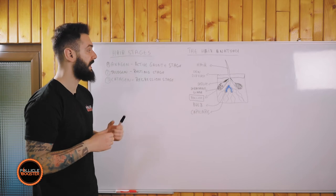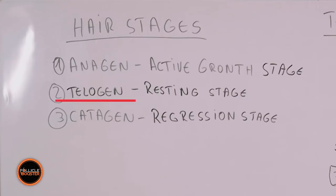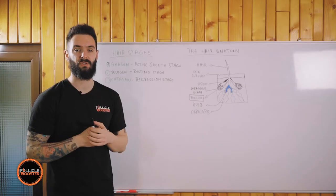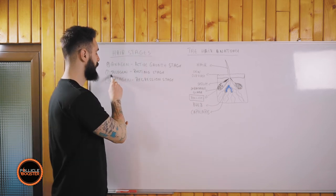After that is the telogen part. This is the resting stage when your hair is not in first or the third stage, so it's just standing by. When your hair is on the second one, it's either going to the anagen part or to the catagen part.